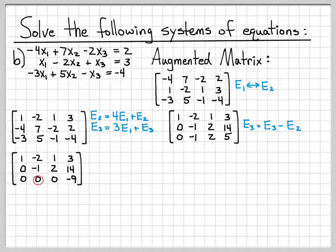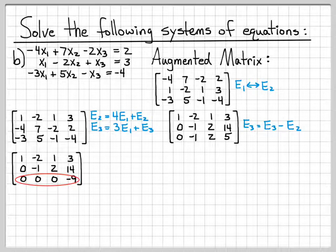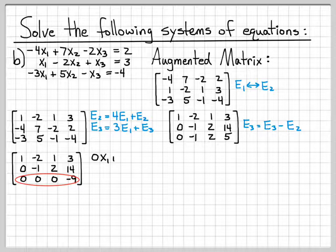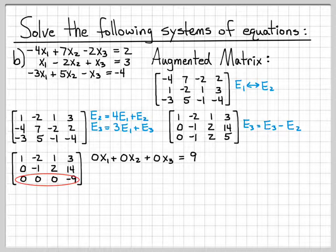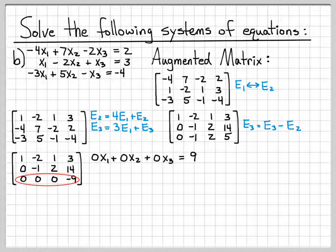I've gotten some 0s down here that I like. At this point though, something interesting has happened. If we look at this equation right here, I have a whole bunch of 0s on the left and then a negative 9 on the right. If we actually write out what this equation is saying, it's saying that 0 times x1 plus 0 times x2 plus 0 times x3 equals a negative 9. So this is what that bottom equation means. Well, 0 times x1 plus 0 times x2 plus 0 times x3 is obviously 0. So this equation is really saying that 0 is equal to a negative 9.